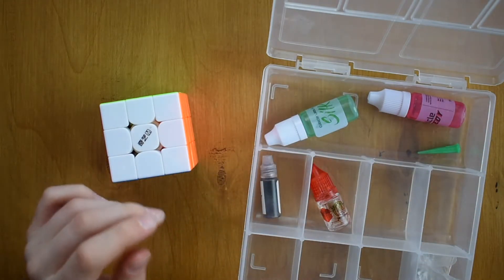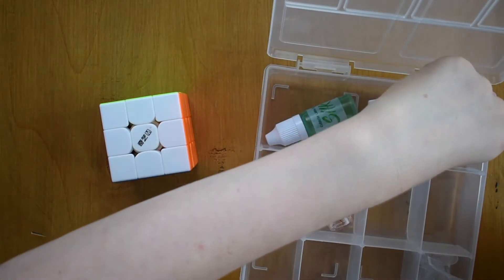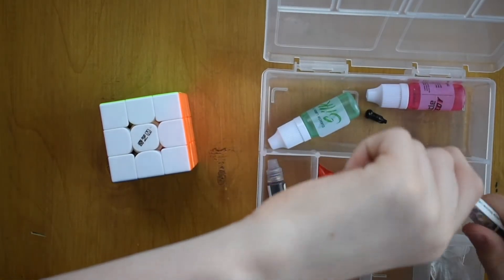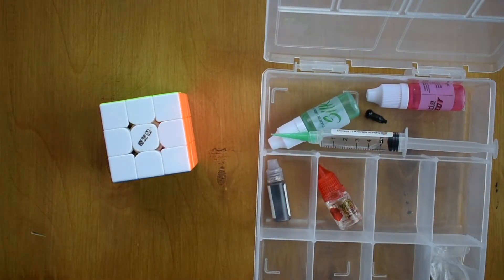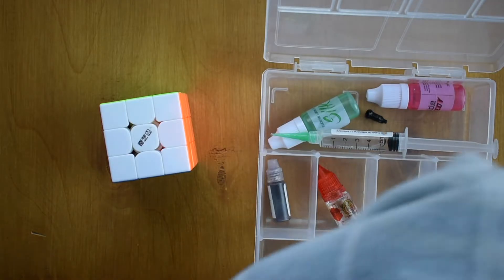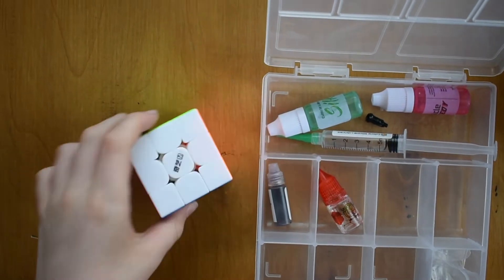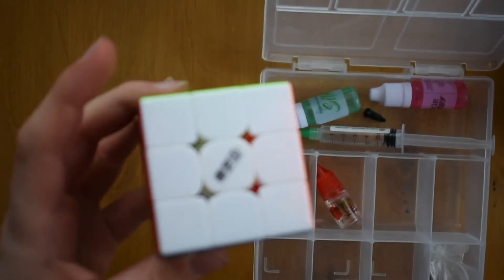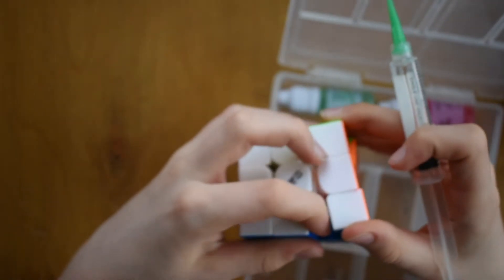I'm going to start off with some weight four. Put that down real quick. Lube can be quite sticky, so I'm going to want to have this towel. What I'm going to do is add some lube on the edge of this piece here.